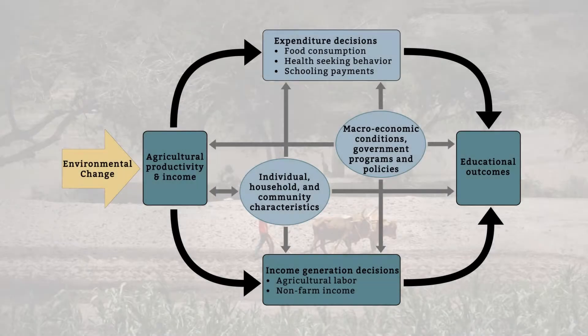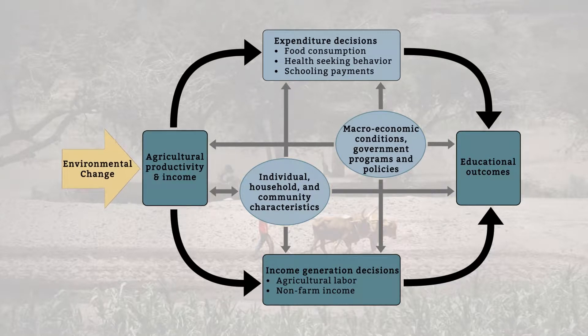We used the synthesis method for this research, and what that involved was combining temperature and precipitation data from Ethiopia with longitudinal household survey data on children's ages and schooling completed. Heather and Clark's conceptual model depicted potential relationships between environmental change, agricultural production, and educational attainment for children living in farming households.